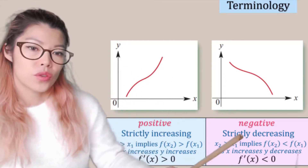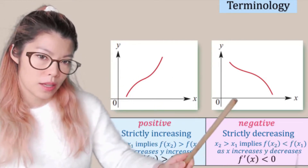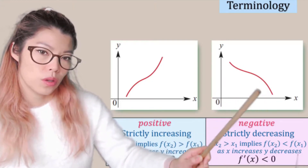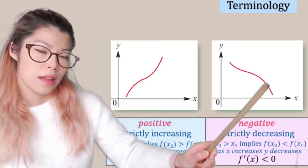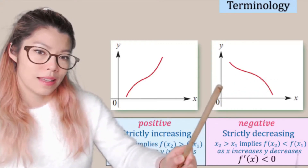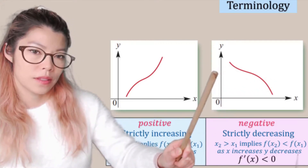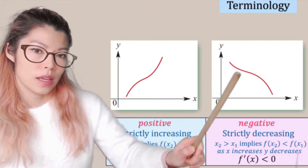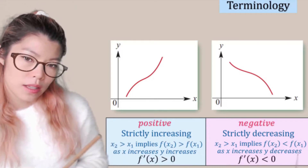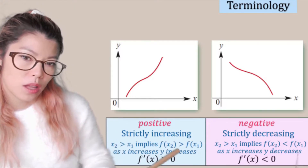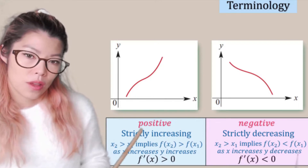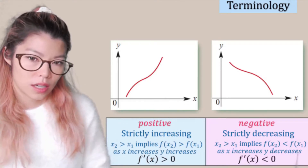And strictly decreasing is the opposite. As we go, let's say this is x1, then x2 being greater than x1 implies that y2 is less than y1, or f of x2 is less than f of x1. So memorize this middle line as you'll be using that to describe functions, whether they're strictly increasing or strictly decreasing.